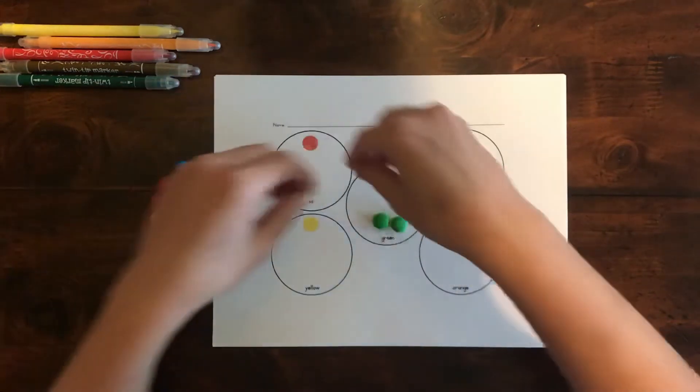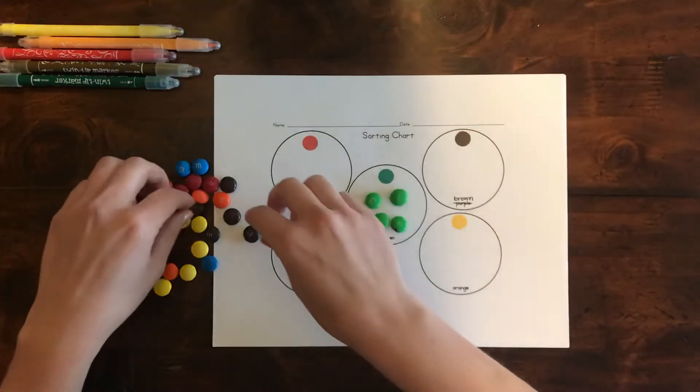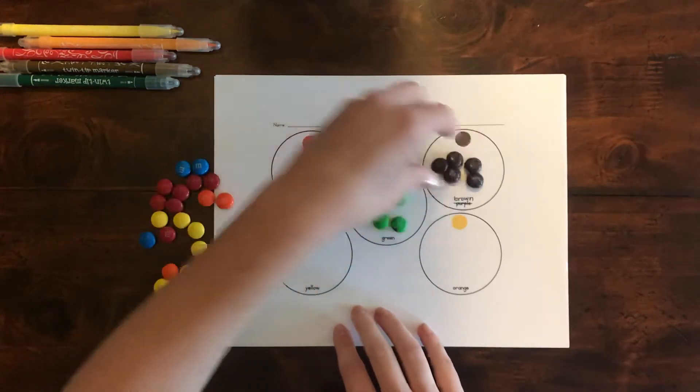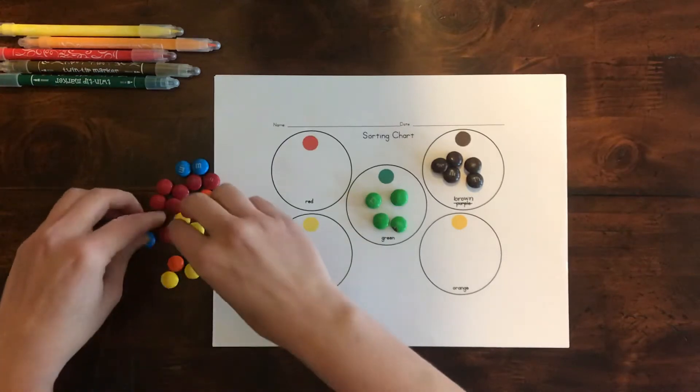So I'm sorting the greens first, then the brown, then I'll sort the yellow.